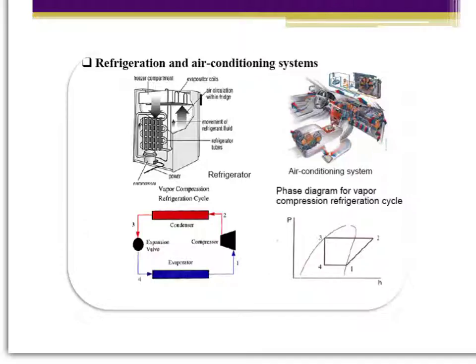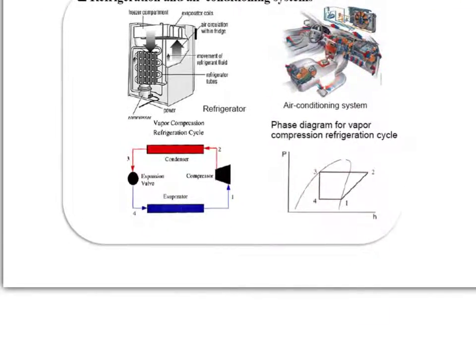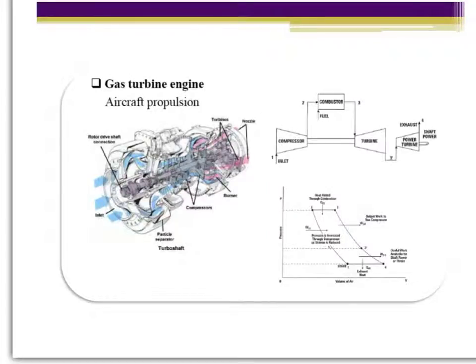These are a couple of slides that show just some very basic examples of thermodynamics at work. When you think about your refrigeration and air conditioning systems, there is an exchange of energy between the internal environment of the refrigerator or air conditioner unit and the surrounding environment. Another example is our gas turbine engines — what we see in jet planes, power plants, and engines in our cars — they all operate based on the production of mechanical work from a heat source.